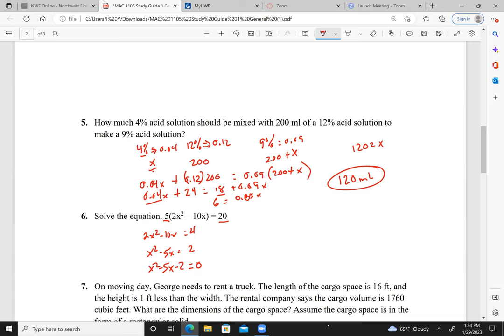Now quadratic formula. x equals negative b. So the negative of negative 5 plus or minus the square root of negative 5 squared minus 4 times a, which is 1, times c, which is negative 2, all over 2 times a, which is still 1. So I have 5 plus or minus the square root of 25 plus 8 over 2, which is 5 plus or minus the square root of 33 over 2, which cannot be reduced any further.